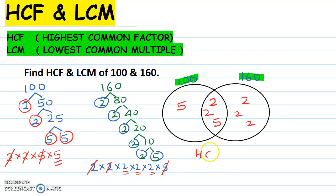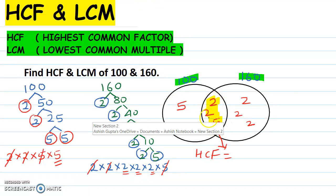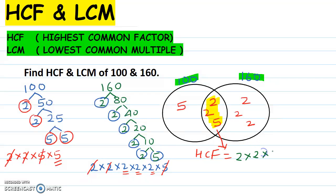Your HCF will be this common part. The common part is 2, 2 and 5. So let us multiply: 2 times 2 is 4, and 4 times 5 is 20. So HCF is 20.